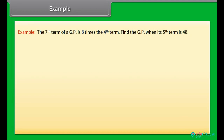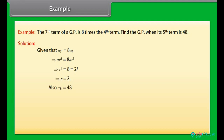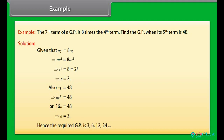Example: The 7th term of a GP is 8 times the 4th term. Find the GP when its 5th term is 48. Solution: Given A7 = 8×A4, it implies A×R⁶ = 8×A×R³, so R³ = 8 = 2³, therefore R = 2. Also, A5 = 48 implies A×R⁴ = 48, so 16×A = 48, giving A = 3. Hence the required GP is 3, 6, 12, 24, and so on.